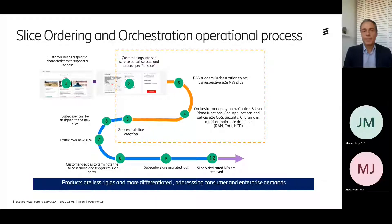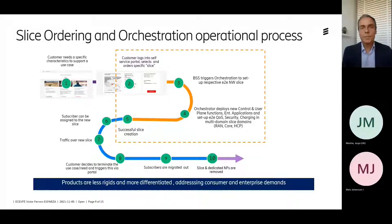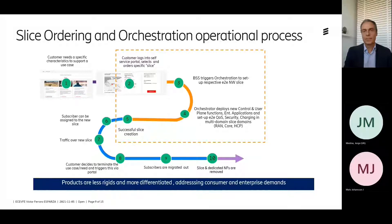The slice is successfully created and subscribers can be assigned to it and traffic can flow. At some point the slice might be terminated or reconfigured via this portal, subscribers should be migrated out, and the slice and network functions resources should be removed. With this flow, services can be deployed in an automated way and products that operators offer to their customers can be less rigid and more differentiated, addressing more complex consumer and enterprise demands.